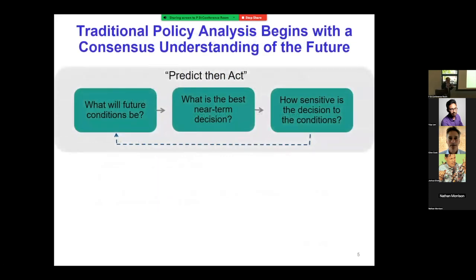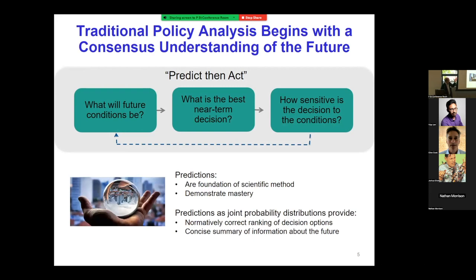For many problems, the model is to begin with a common understanding of the future from which we can rank decision options. In the decision science literature, if you can characterize the future with a joint probability distribution over future states of the world and have a utility function, you can come up with a normatively good ranking. You can call this 'predict then act' — you need this consensus understanding before you act. You never get on an airplane if the people who built and flew it didn't work well in that mode.